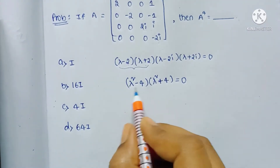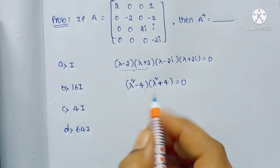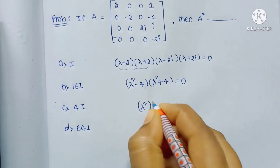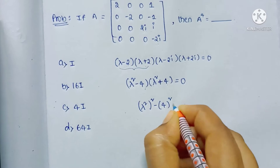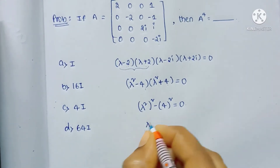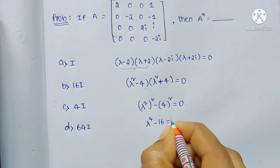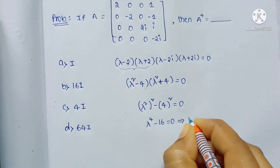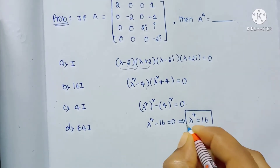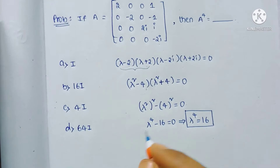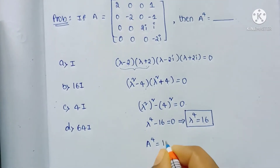Again applying the same (A + B)(A - B) form, we get λ² whole squared minus 4² = 0, which gives λ power 4 minus 16 = 0. Therefore λ power 4 = 16. By the Cayley-Hamilton theorem, A power 4 = 16I.